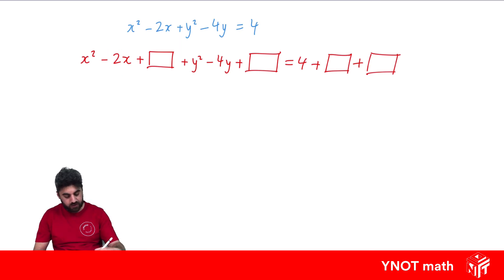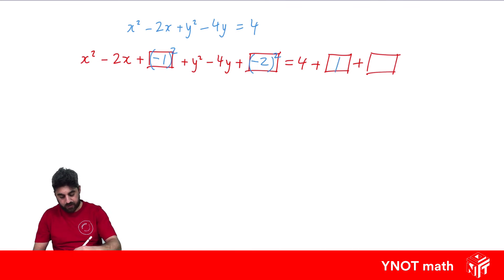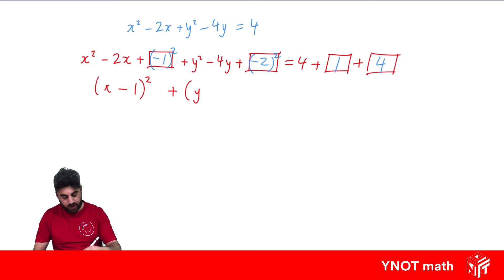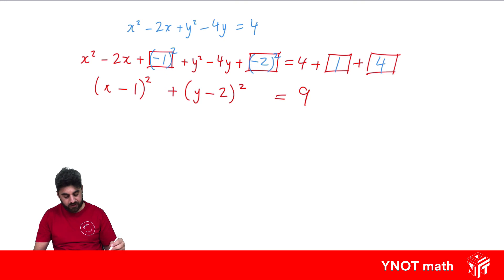To complete the square, halve the coefficient of x: half of minus 2 is minus 1, and we square it to get minus 1 squared. Similarly, half the coefficient of y is minus 2, and we square it to get minus 2 squared. We add these to both sides: minus 1 squared equals 1 and minus 2 squared equals 4, giving us 4 plus 1 plus 4 equals 9 on the right-hand side.